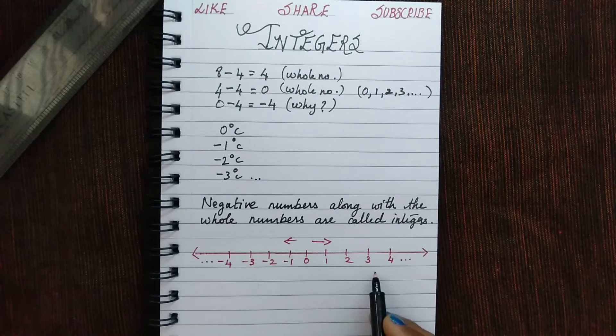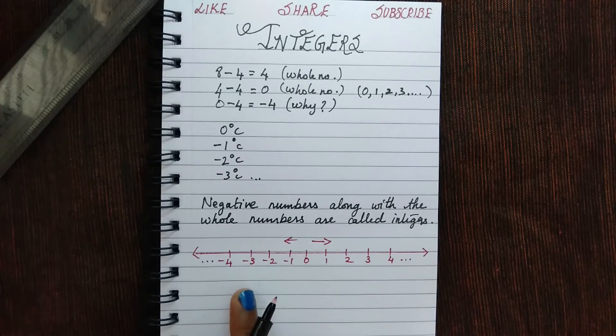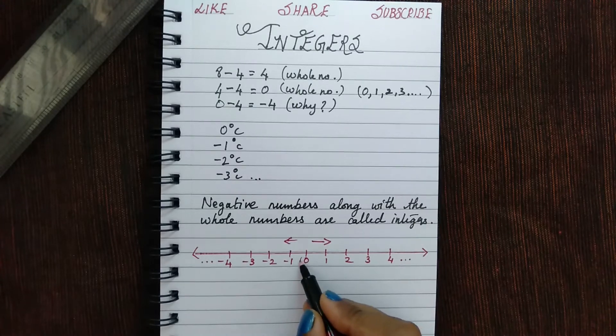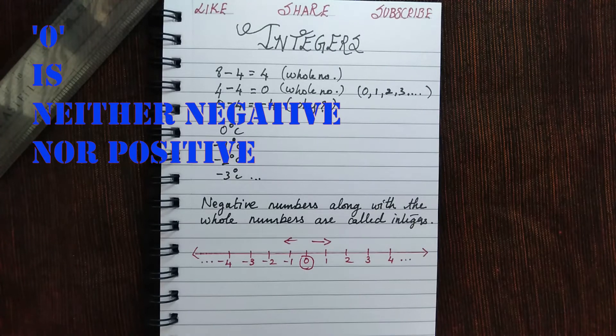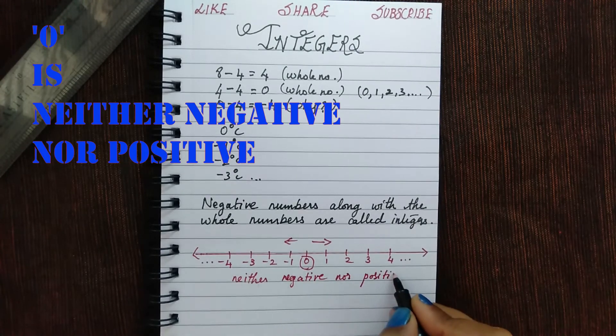And please note that the positive integers are not written with a plus sign as we do for negative integers. Also remember that 0 is a neutral integer, meaning they are neither negative nor positive.